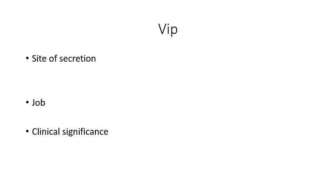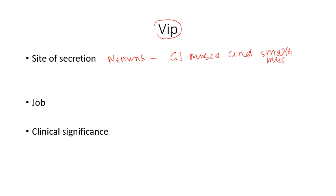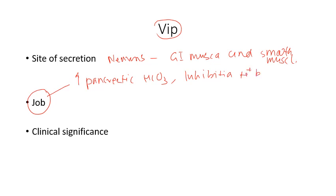VIP — vasoactive intestinal polypeptide — is released by neurons present in the GI mucosa and smooth muscles. Its actions resemble those of secretin: it increases pancreatic secretion, specifically pancreatic bicarbonate secretion, and inhibits acid (H+) secretion by the stomach. The second job of VIP is relaxation of GI smooth muscles.